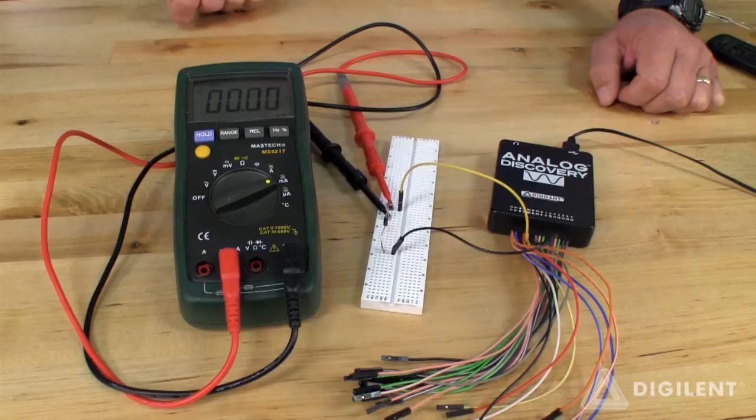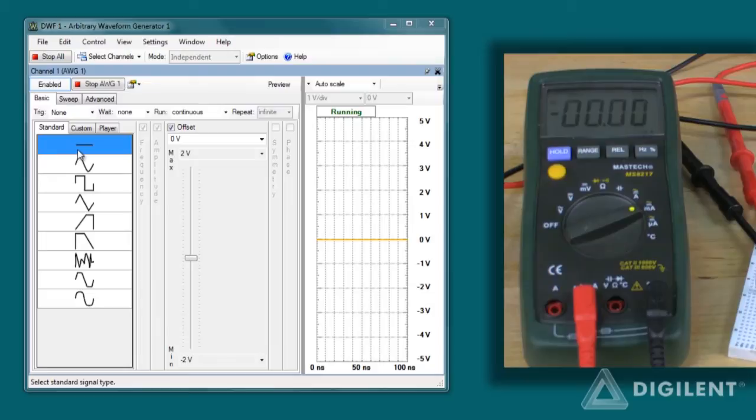Now let's apply voltage to the diode and see what the current does. The analog discovery waveform generator is set up here to apply a constant voltage. At the moment, we're applying zero volts to the diode, and as we expect, we see zero current going through the diode.